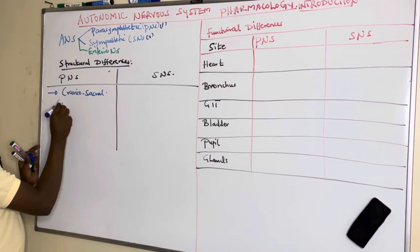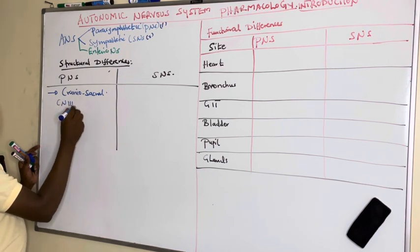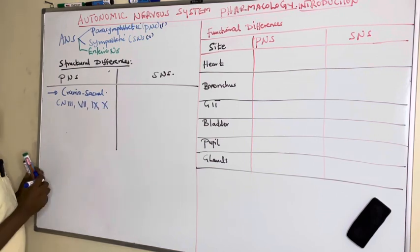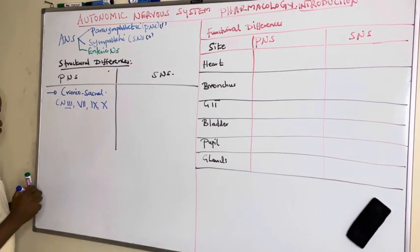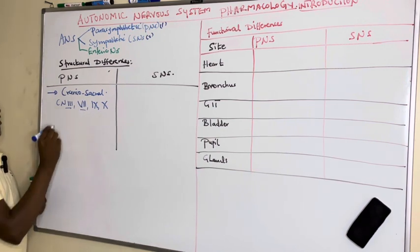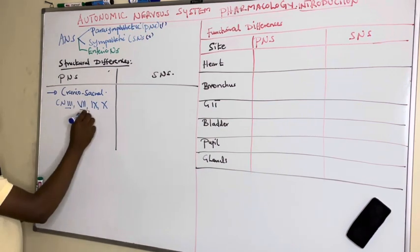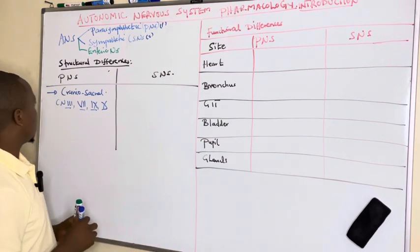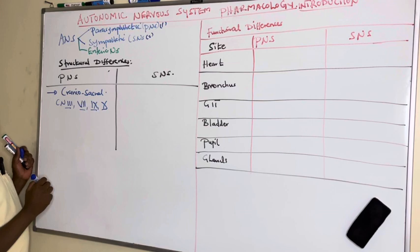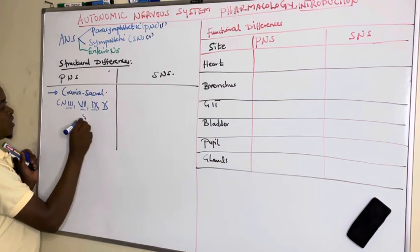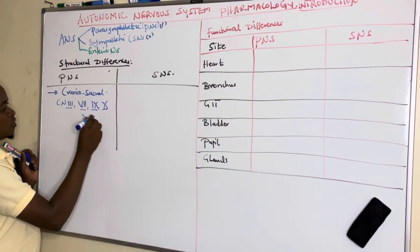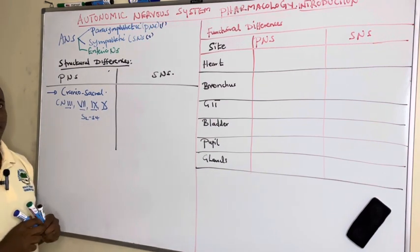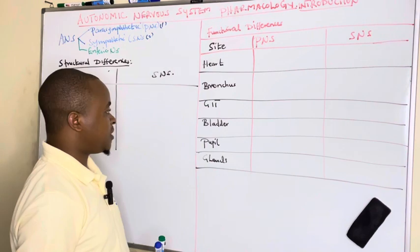The craniosacral supply is provided by cranial nerve 3 (oculomotor), cranial nerve 7 (facial), cranial nerve 9 (glossopharyngeal), and cranial nerve 10 (vagus nerve). At the sacral level, S2 to S4 supply the bladder and the lower parts of the GIT.